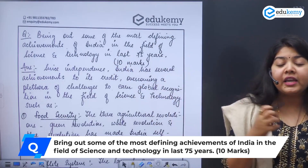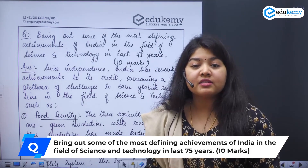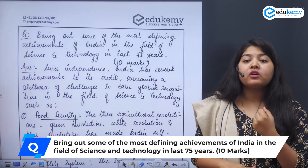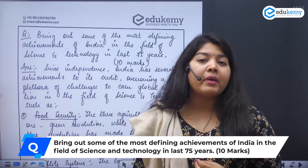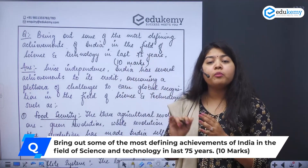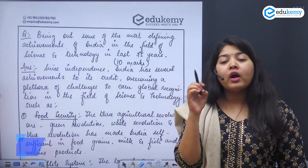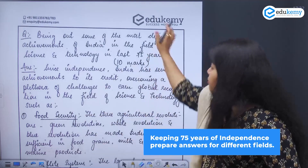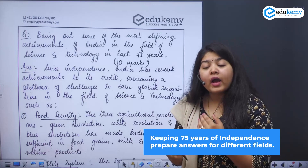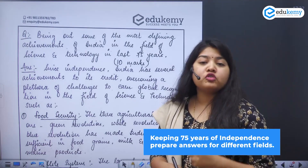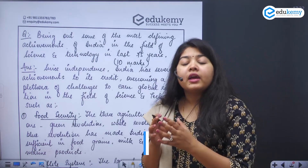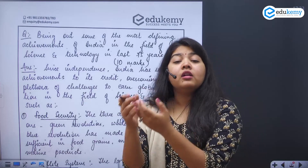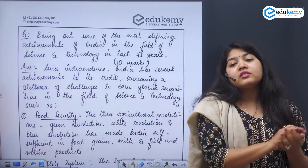This brings out some of the most defining achievements of India in the field of science and technology in the last 75 years. As your country is celebrating 75 years of independence, a small tip: this is an answer attempted from the point of view of science and technology. You should also have lists for major economic developments, how society evolved post-independence, important infrastructure developments, and important environmental initiatives taken in the last 75 years.